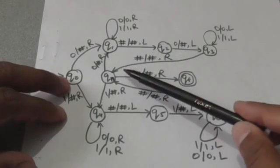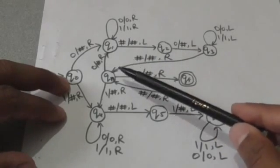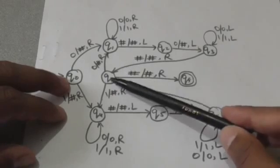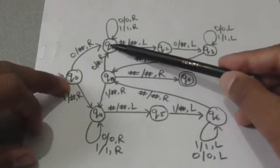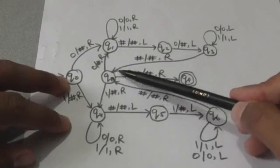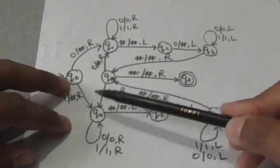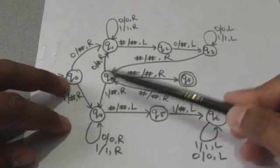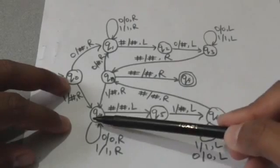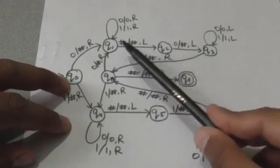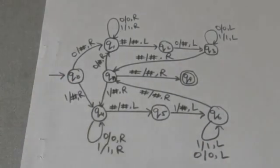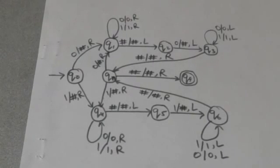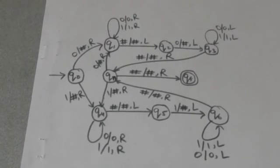If the symbol is 0, the Turing machine jumps to state Q_1; if it is 1, the Turing machine jumps to state Q_4, and the same procedure is repeated.